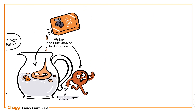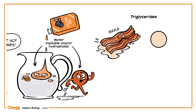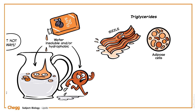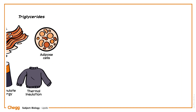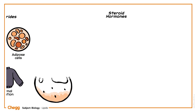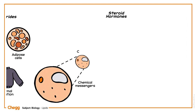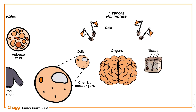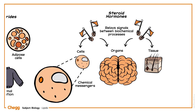One category of lipid is triglycerides, and we'll know these types as pretty much all edible fats. They're sequestered in adipose cells as a solid fat that provides a reservoir for organisms to both accumulate energy and provide thermal insulation. Some lipids, such as steroid hormones, act as chemical messengers between cells, organs, and tissues, while others relay signals between biochemical processes inside a cell. The relay of signals is crucial for organisms to function — think how dangerous air traffic would be if air traffic controllers didn't relay messages effectively.